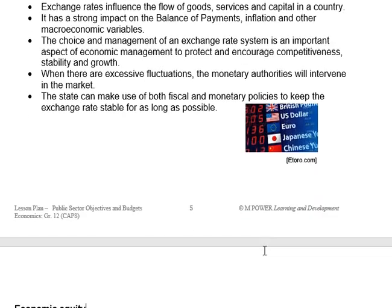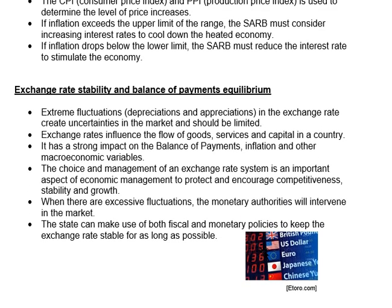The second-to-last goal of the government is exchange rate stability and balance of payments equilibrium. Extreme fluctuations in the exchange rate create uncertainties in the markets. At the moment, our RAND is all over the place — it's depreciating, then getting a bit stronger, then depreciating again. Any big depreciations and appreciations create uncertainties. It impacts on the prices we pay for our imports, it impacts on the amount of exports we are able to do, and there's a direct link between that and the balance of payments.